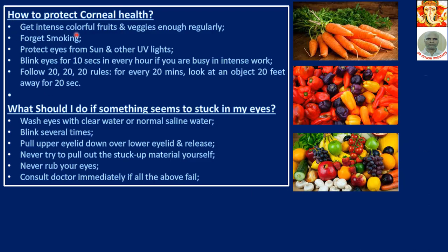How to protect corneal health: get intense colorful fruits and vegetables regularly, as they help a lot. Forget smoking. Protect eyes from sun and other UV lights — this is very important, so wear colored goggles whenever needed. Blink eyes for 10 seconds every hour, as blinking gives a lot of relaxation to the eye. Please practice this, especially if you are busy with intense work.